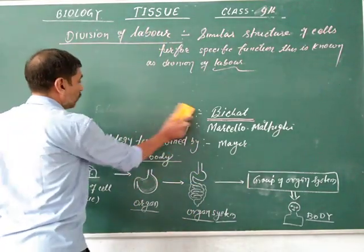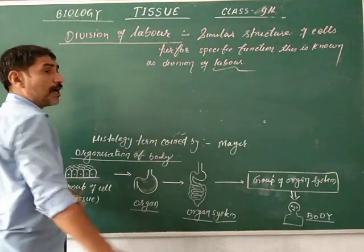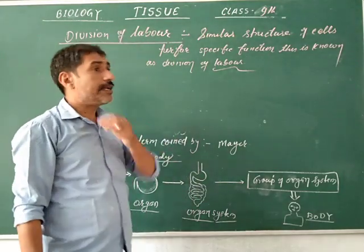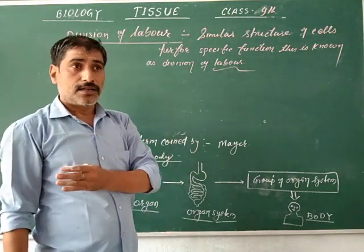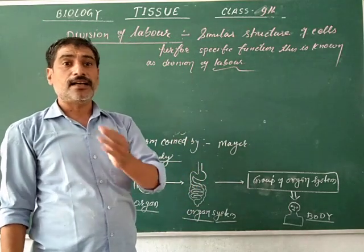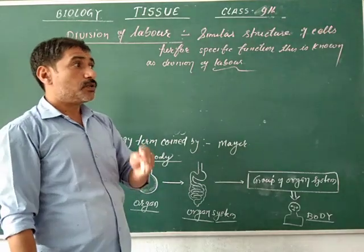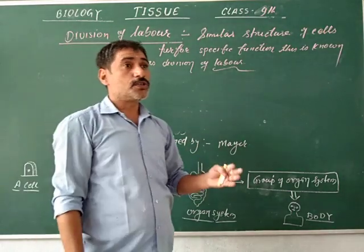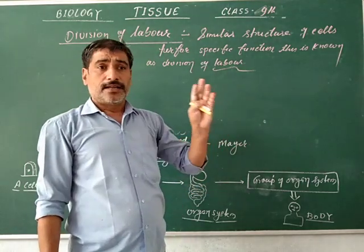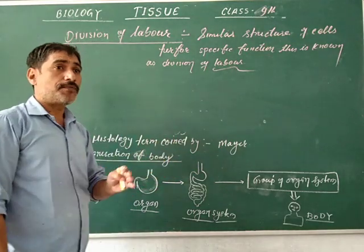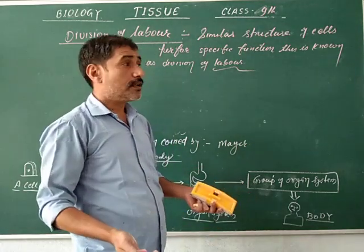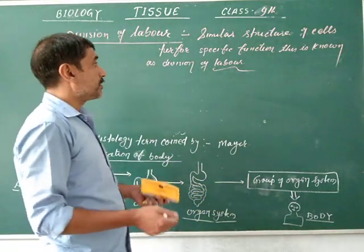Now let us know about plant cells versus animal cells. Plant cells have less active incorporation compared to human beings or animal cells because plants are less active than animals. Most of the plant cells are dead cells, but in the case of animals, most of the cells are living, so animals are highly active compared to plant cells.